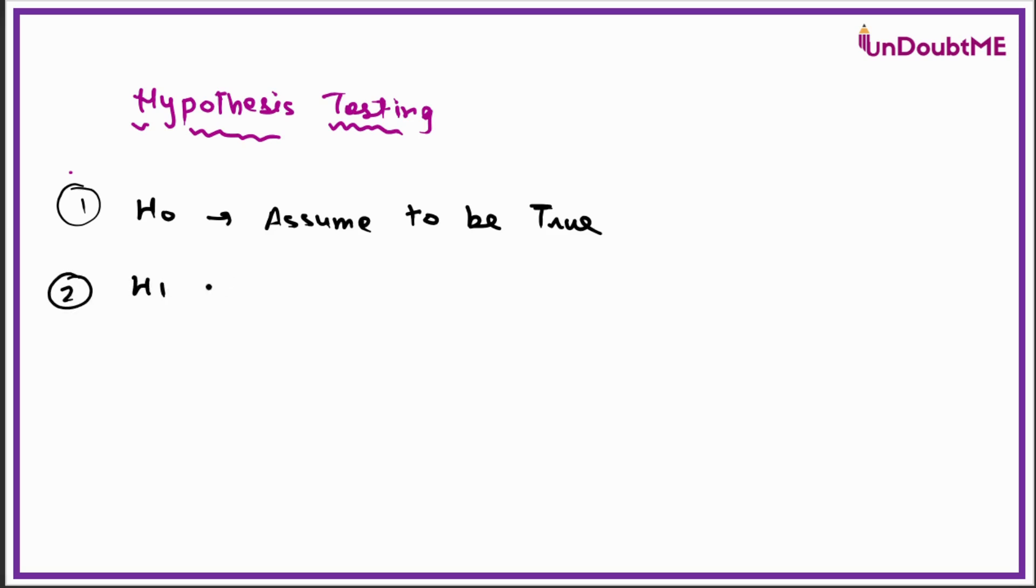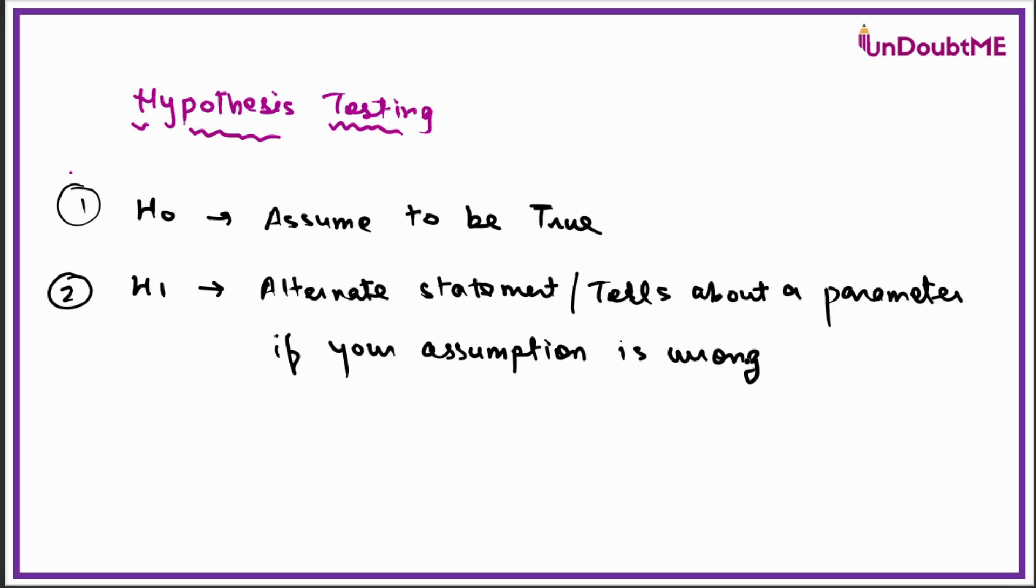Then comes the alternate hypothesis. This is the statement which shows that if your assumption is wrong, then what should be right. So H1 is mainly an alternate statement which tells about a parameter - what are we calculating, what are we finding probability for - if your assumption is wrong. Basically, if your null hypothesis is not true, then what is true will be the alternate hypothesis.